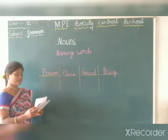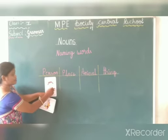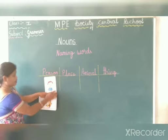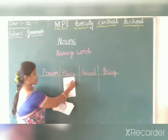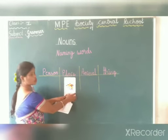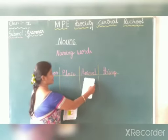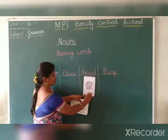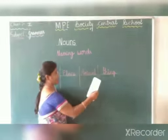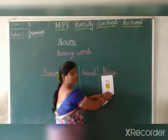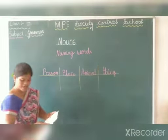Noun is the name of a person. Which place is it? It's a school. Name of an animal — elephant. And name of a thing — it's a log.